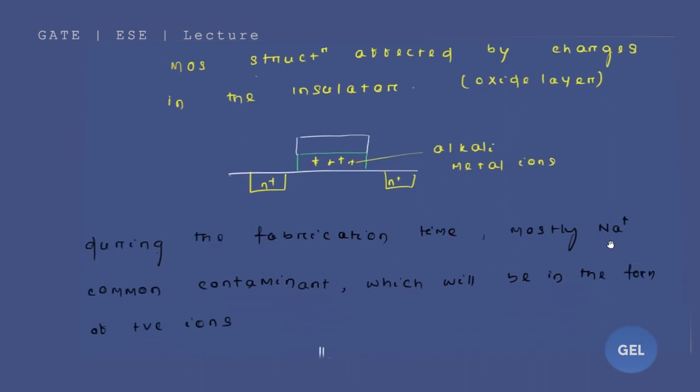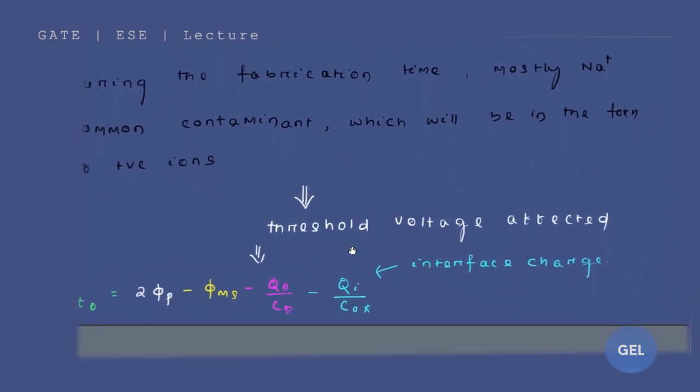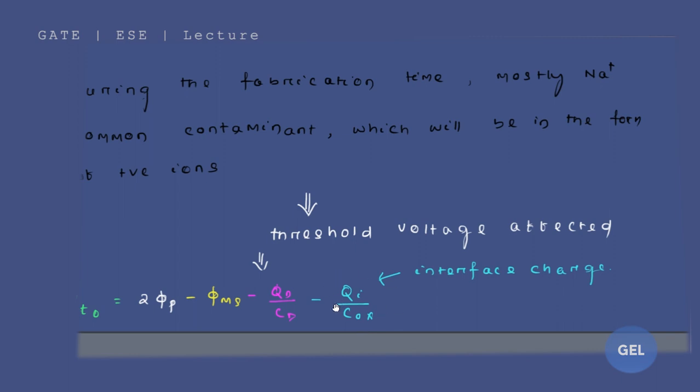Which will be in the form of positive ions. And those contaminants, this may affect your threshold voltage expression. So to overcome we are going to add another term that is called as your interface charge.